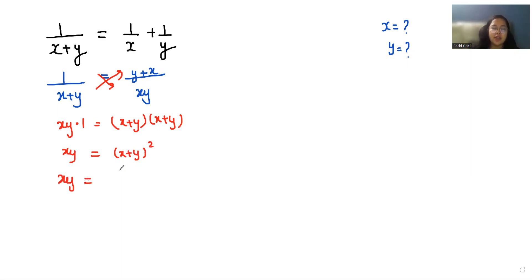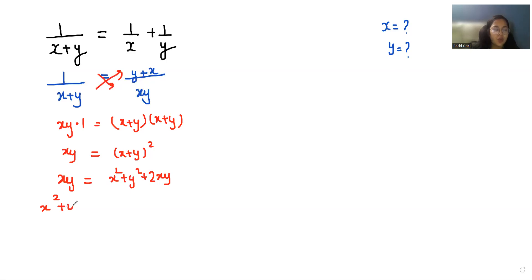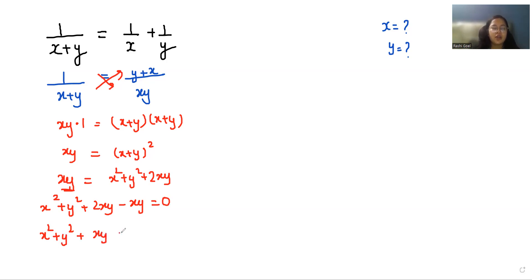So xy = (x+y)². Here we are going to use the famous identity: (a+b)² = a² + b² + 2ab. So it becomes x² + y² + 2xy. I am going to take this xy to the other side, giving negative xy, so x² + y² + 2xy − xy = 0, which means x² + y² + xy = 0.